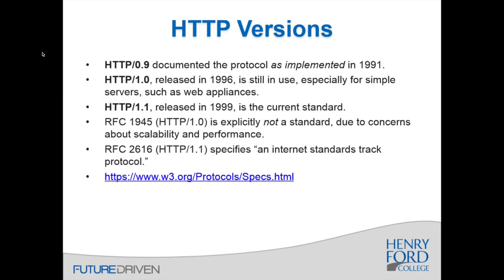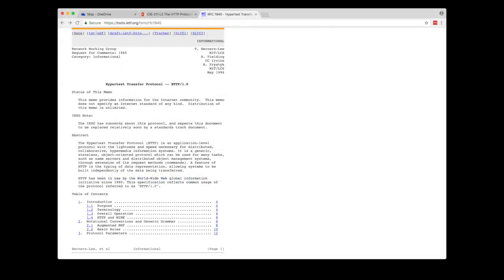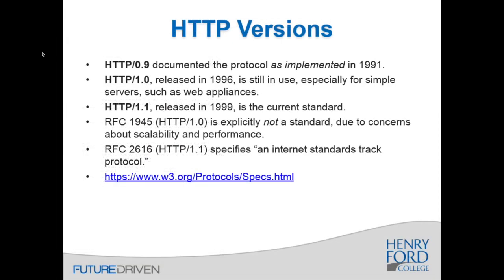HTTP has a variety of different versions. Version 0.9 was first documented in 1991 — it explained how they were using it at the time but certainly wasn't complete. In 1996, HTTP 1.0 came around. It's still available and most servers and clients can fall back to it. RFCs — Requests for Comments documents — are out on the internet and explain how the internet works. RFC 1945, from 1996, explicitly says this is not yet a standard, noting concerns about scalability and performance.